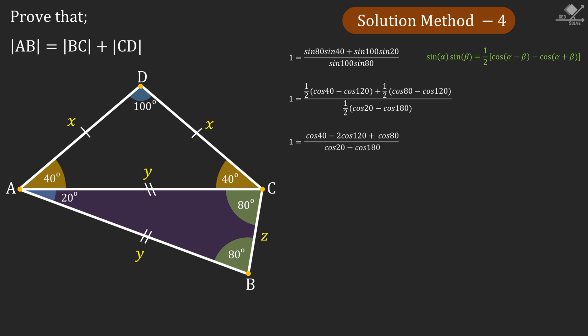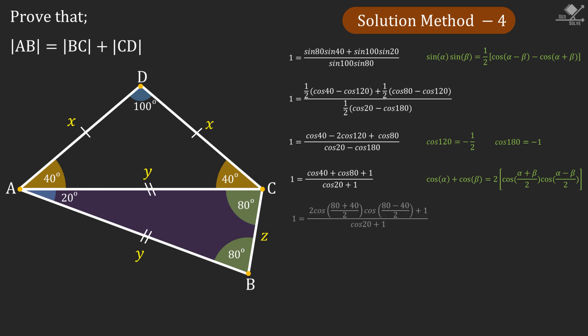Remember that cosine 120 is minus 1 over 2 and cosine 180 is minus 1. If we put these values in we will have this equation. Now remember the trigonometric identity for cosine alpha plus cosine beta. If we apply this in our equation we will have this equality, and that will simplify as follows. And we know that cosine 60 is 1 over 2.